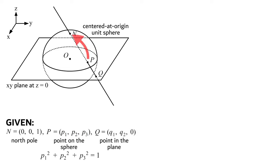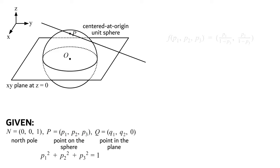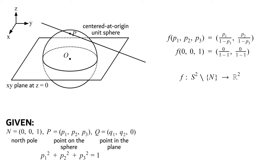The closer point p is to the north pole, the further out in the plane point q ends up being. If you then let p equal the north pole, you would encounter an undefined output of the function due to the output coordinates equaling 0 over 0. The north pole can either be excluded from the domain so that the sphere with the north pole removed maps to the plane, or it can be included and the entire sphere projects to the plane unified with what is known as the point at infinity.